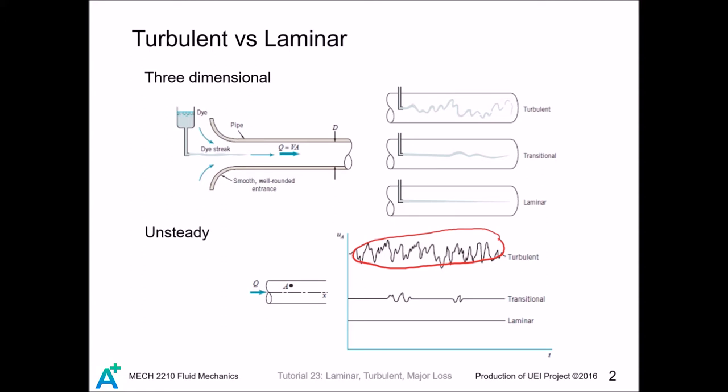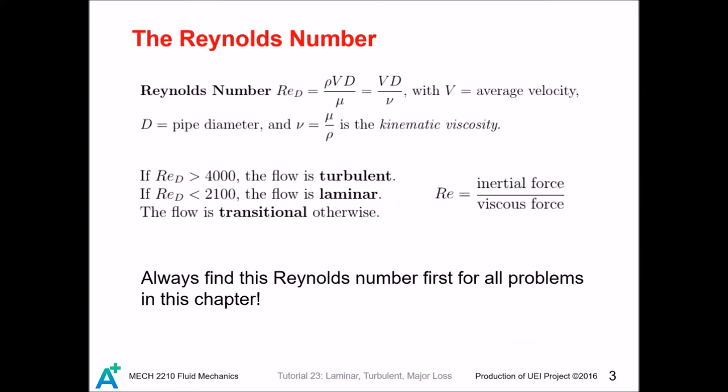Since laminar and turbulent flow are so different, it is very important for us to know if the flow is laminar or turbulent. To know when the flow is turbulent, we use the dimensionless Reynolds number. Its definition is given here, and we have shown that it is in fact dimensionless in tutorial 2.